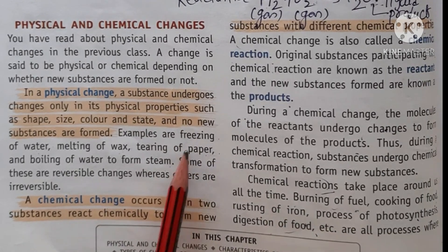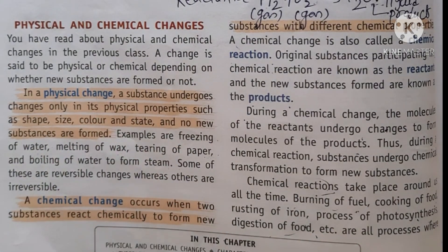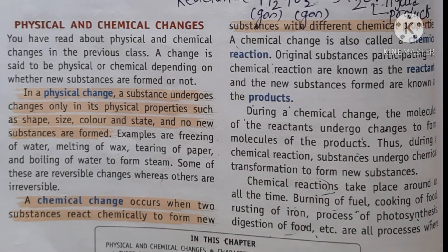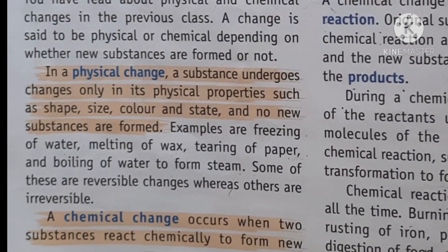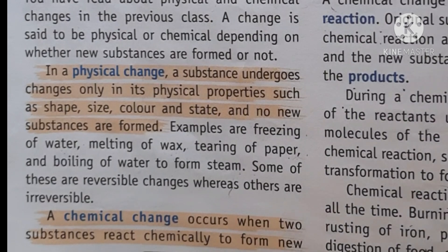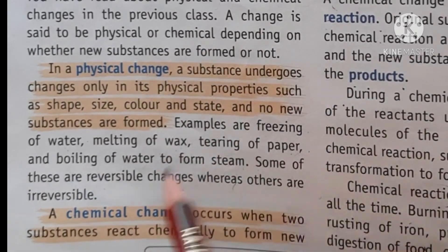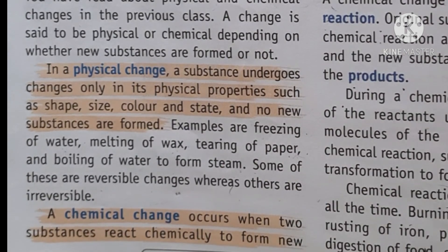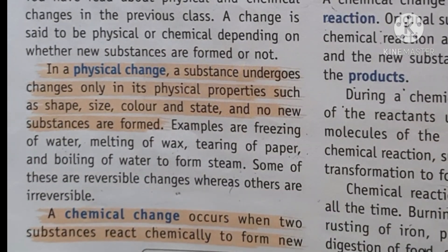Tearing of paper - there is only a change in the physical property, there is no new substance formed. Boiling of water - it gets converted into steam vapors. These are all physical changes. The most important thing to keep in mind about physical change is that some are reversible changes whereas others are irreversible. Reversible means that which can be reversed - changed back to its original form. Irreversible means that you cannot put it back in the original form.